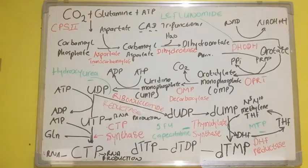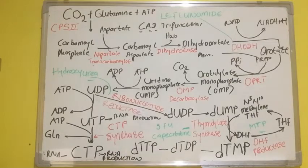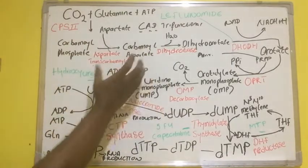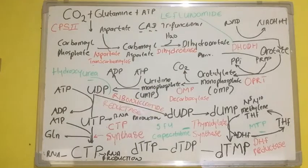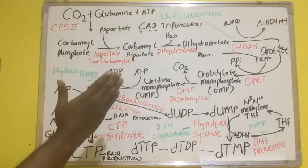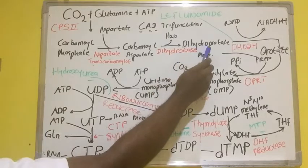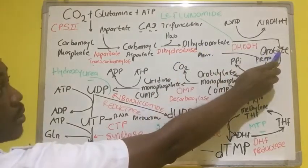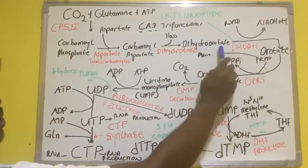Carbamoyl aspartate is being converted to dihydroorotate by the enzyme dihydroorotase. The dihydroorotase, aspartate transcarbamylase, and CPS2 form a complex which we call CAD, a functional enzyme complex. From there, the dihydroorotase converts dihydroorotate to orotic acid, catalyzed by dihydroorotate dehydrogenase.